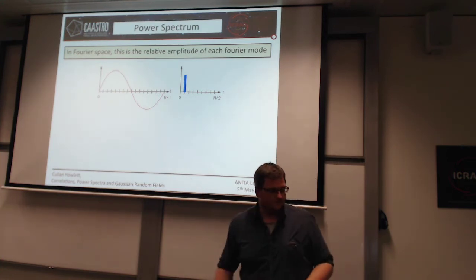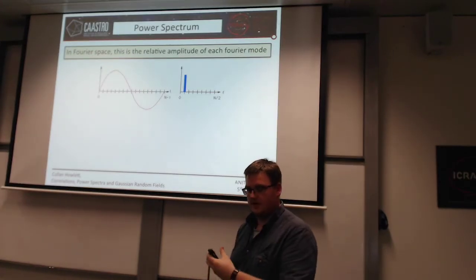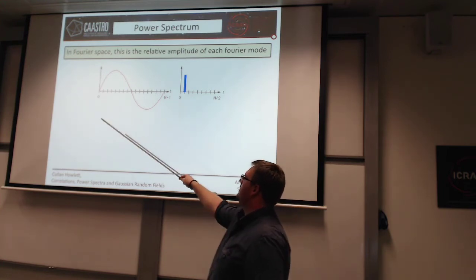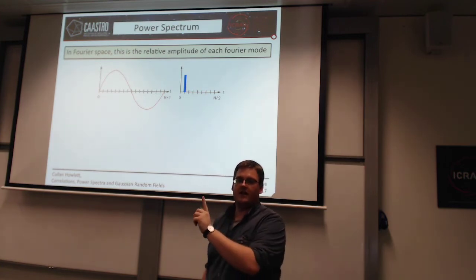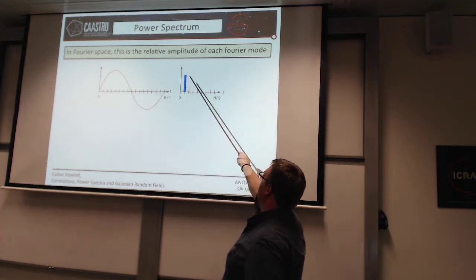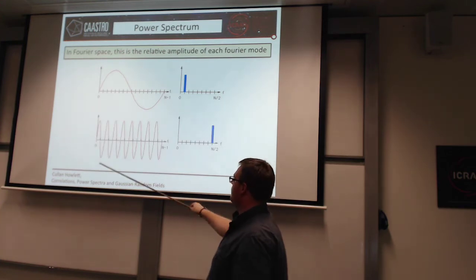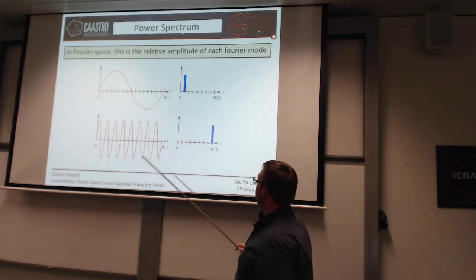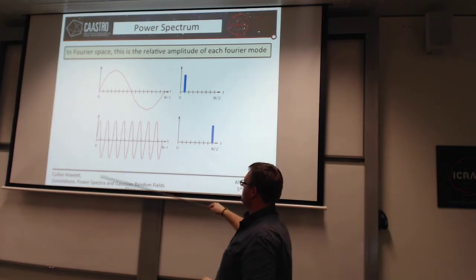The way you compute a power spectrum is by looking at how much power is in a given Fourier mode. For instance, if my field is perfectly described by a sine wave, then the Fourier transform is just a delta function, so my power spectrum is just a delta function at the frequency of that sine wave. Here I've got a sine wave and here its power spectrum. For a higher frequency sine wave, the Fourier transform is still a delta function but now at a higher frequency, so all the power is at a single frequency.